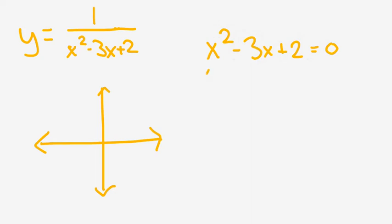So for this one, I'm looking for a pair of numbers that give me a sum of negative 3 and a product of plus 2. That does exist. Those two numbers are negative 2 and negative 1. So that means that I have two vertical asymptotes that are found at x equals 1 and x equals 2.